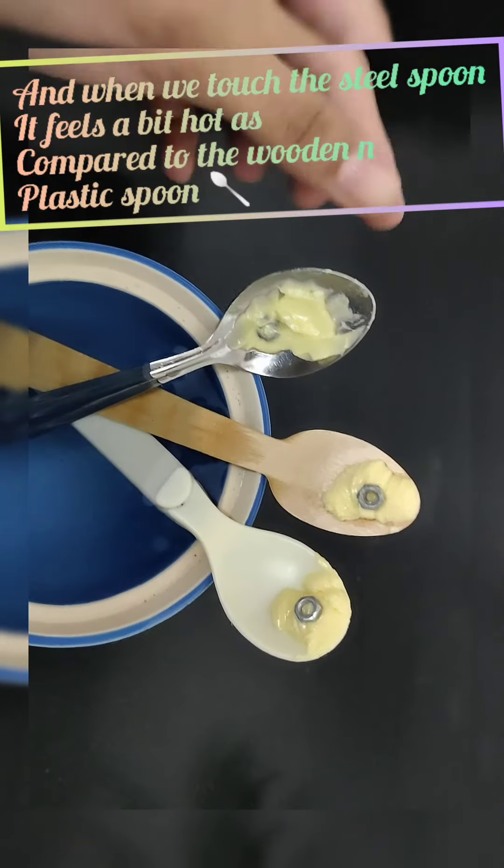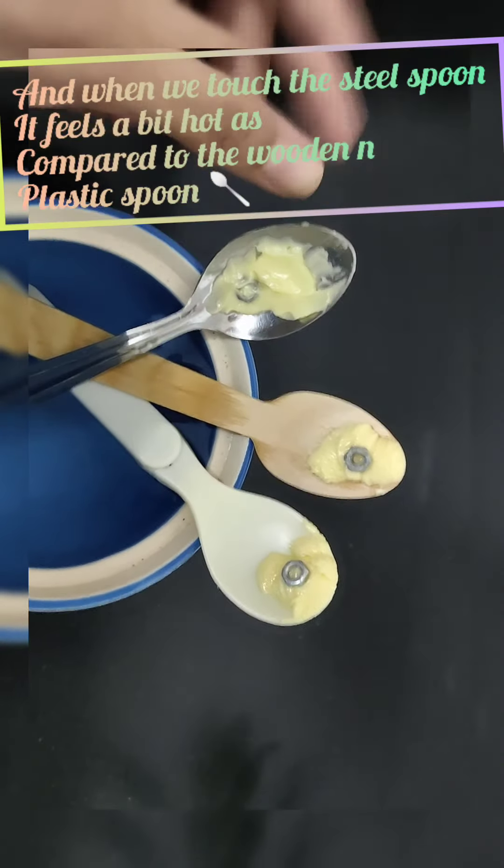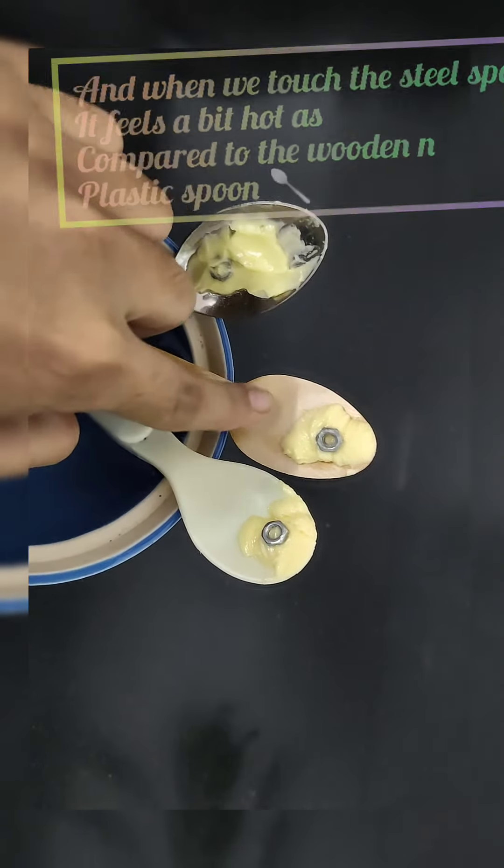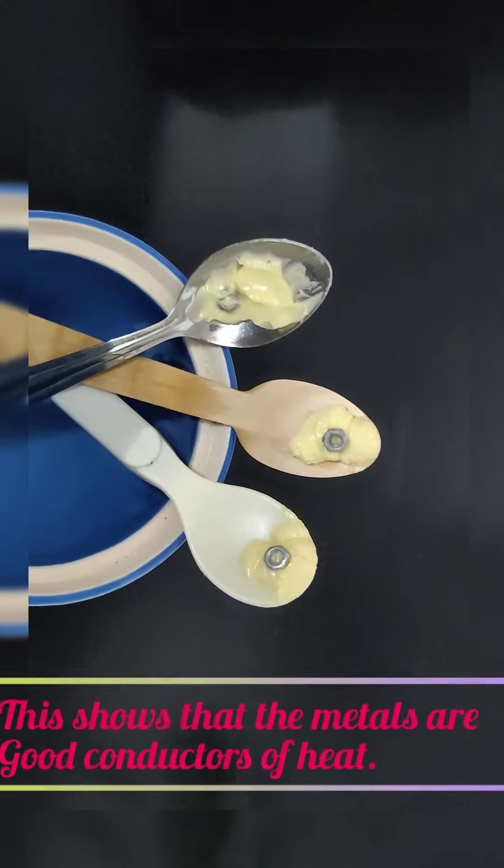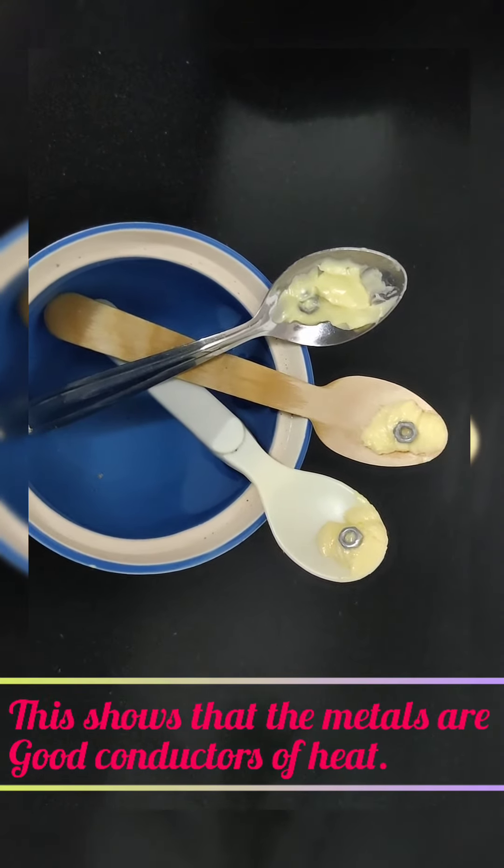And when we touch the steel spoon it feels a bit hot as compared to the wooden and the plastic spoons. This shows that metals are always good conductors of heat.